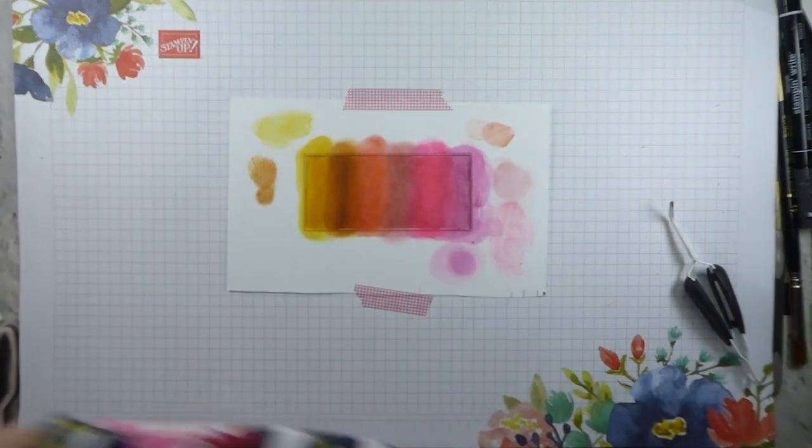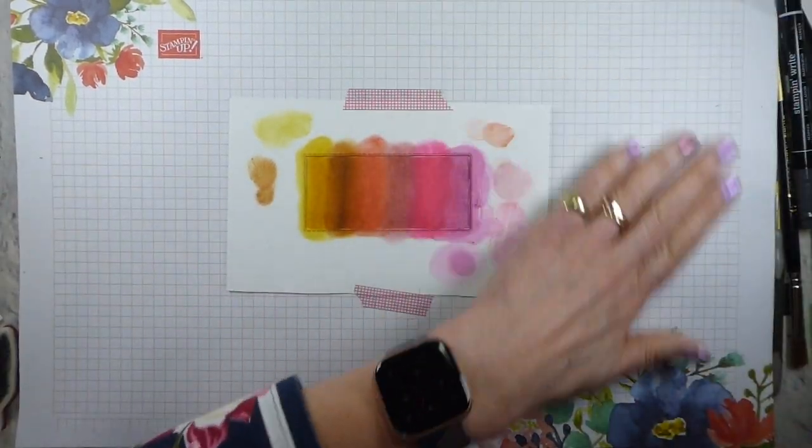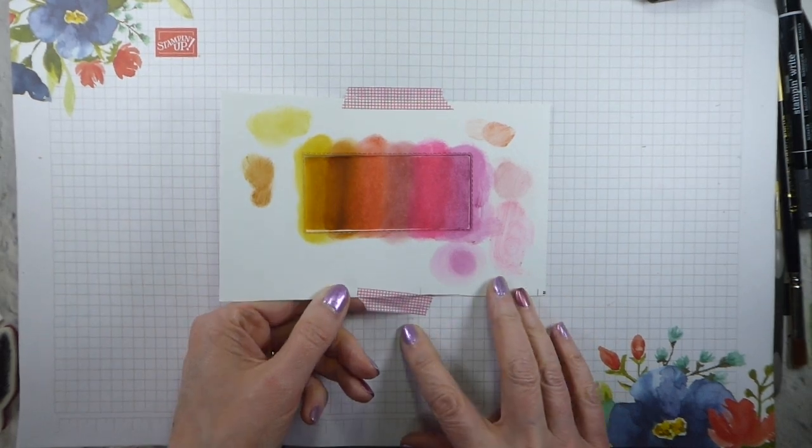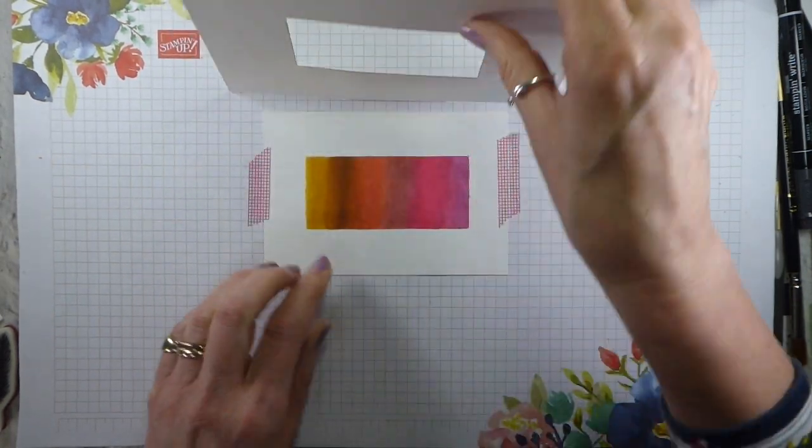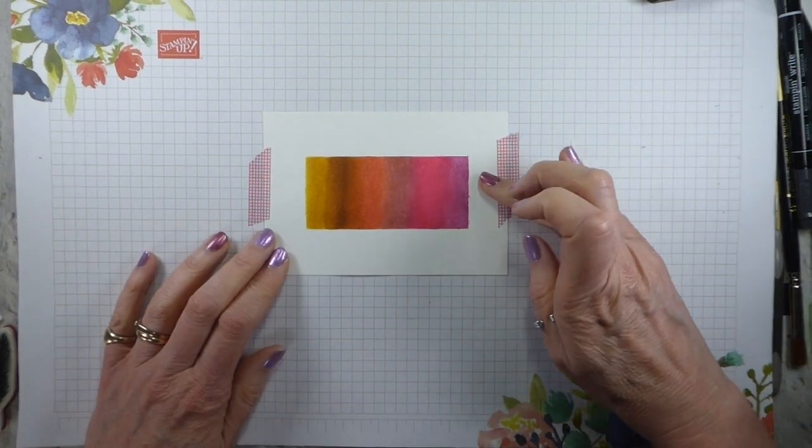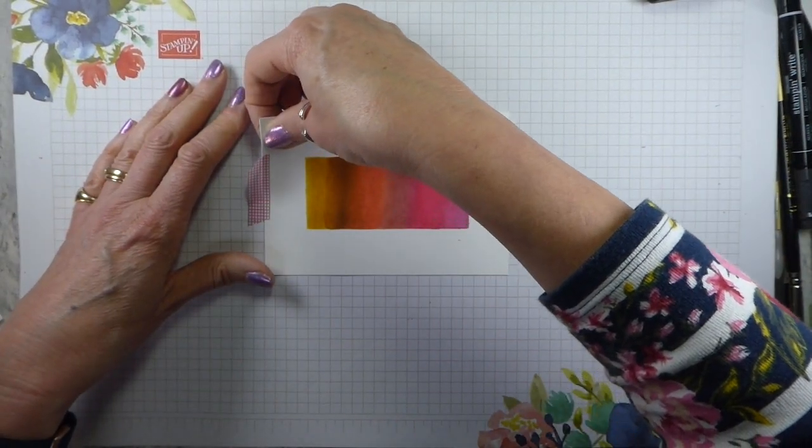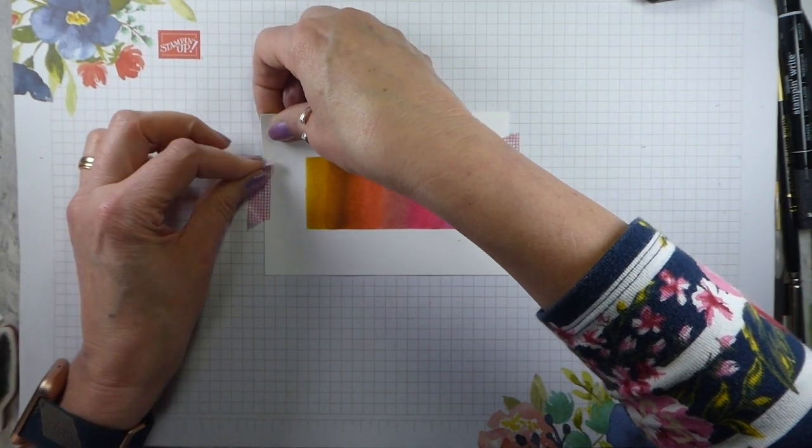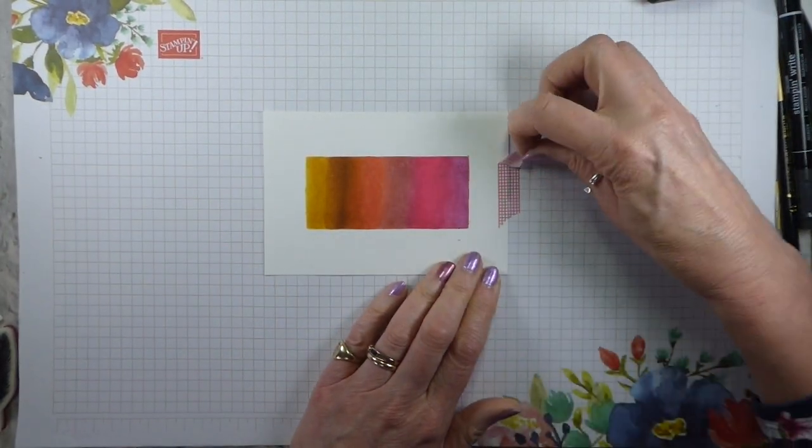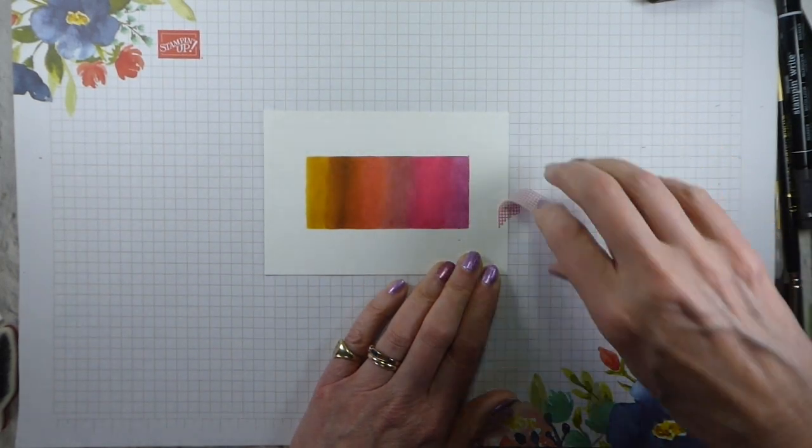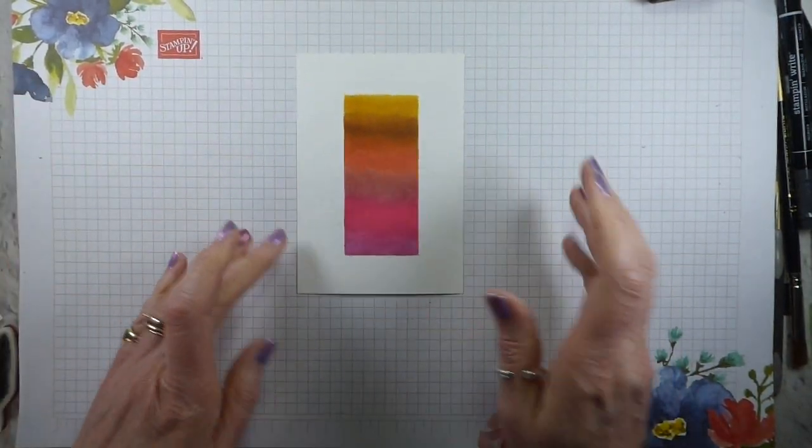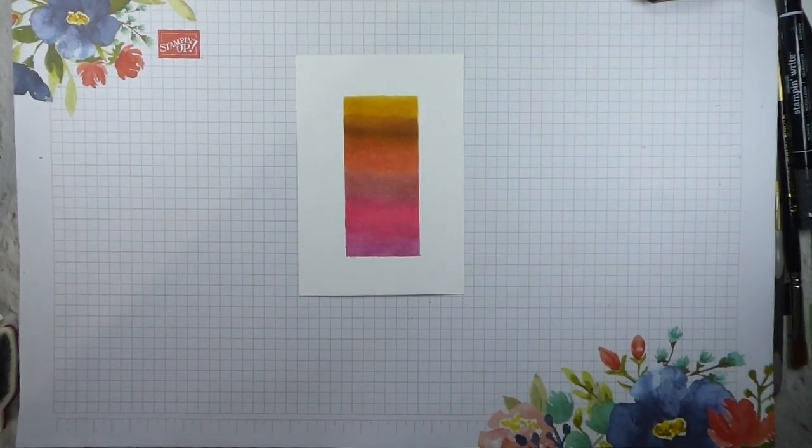Now I am going to go back in on some of the areas to just smooth out some of the edges because they are not straight. Let's come back in with my Melon Mambo and just straighten that edge. Back with my Rococo Rose, Terracotta Tile, Cinnamon Cider, and last but not least, Bumblebee. Let's pop the lid on there, having wiped it first. I don't particularly want Rich Razzleberry on a So Saffron blend.